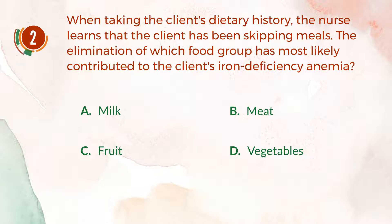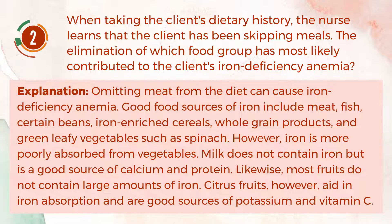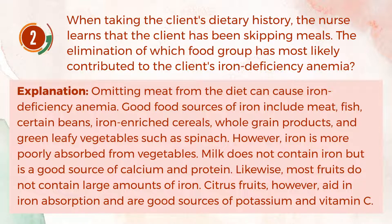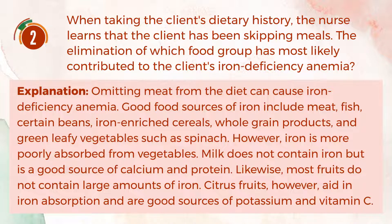The correct answer is B, meat. Explanation: Omitting meat from the diet can cause iron deficiency anemia. Good food sources of iron include meat, fish, certain beans, iron-enriched cereals, whole-grain products, and green leafy vegetables such as spinach. However, iron is more poorly absorbed from vegetables. Milk does not contain iron but is a good source of calcium and protein. Likewise, most fruits do not contain large amounts of iron. Citrus fruits, however, aid in iron absorption and are good sources of potassium and vitamin C.